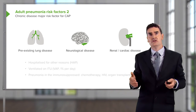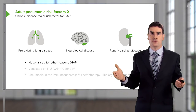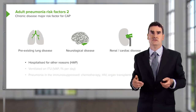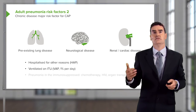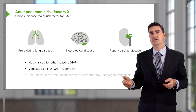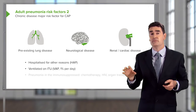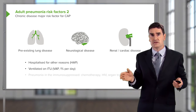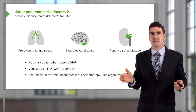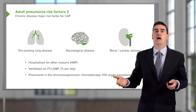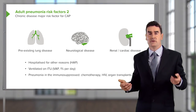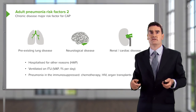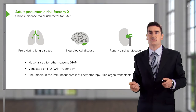If you have hospital-acquired pneumonia, you need to be in hospital — being hospitalized for any reason puts you at risk. If you're ventilated, you're at risk of ventilator-acquired pneumonia, and that risk is about 1% per day that you are ventilated. Patients who are immunosuppressed due to cancer treatment or because they've had a lung transplantation are at risk of pneumonia in the immunosuppressed patient category.